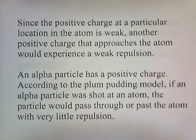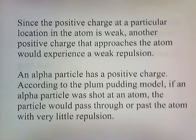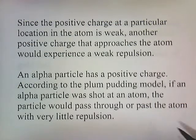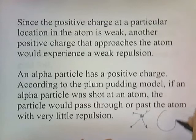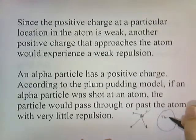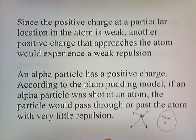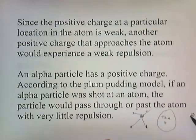Since the positive charge at a particular location in the atom is weak, another positive charge approaching the atom would experience weak repulsion. An alpha particle has a positive charge. According to the plum pudding model, if an alpha particle was shot at an atom, the particle would pass through or pass the atom with very little repulsion, because that thin positive charge wouldn't be strong enough to deflect it.